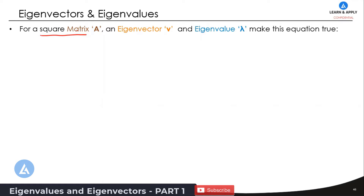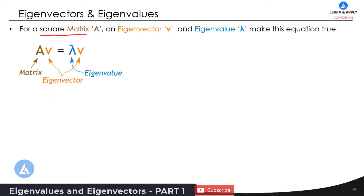For a square matrix — a matrix in which the number of rows equals the number of columns — an eigenvector v and eigenvalue lambda make this equation true: A times v equals lambda times v. This equation describes the relationship between eigenvectors and eigenvalues. Let's understand this with the help of an example.